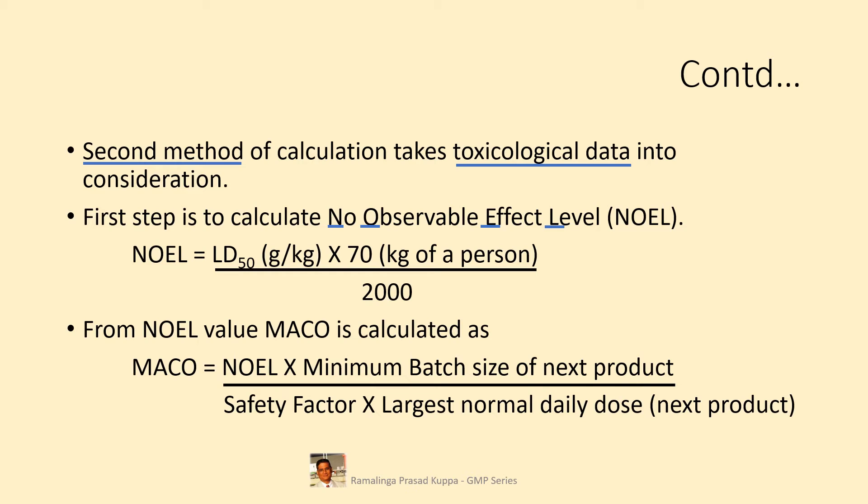Safety factor varies depending upon the route of administration. Generally, 200 is assigned for oral dosage forms. As a thumb rule: for topicals, the safety factor is between 10 and 100; it is between 100 and 1000 for oral products; and between 1000 and 10,000 for parenteral products.